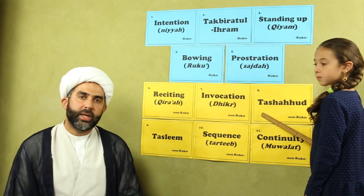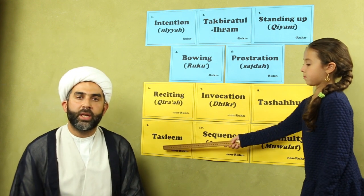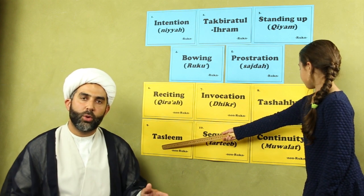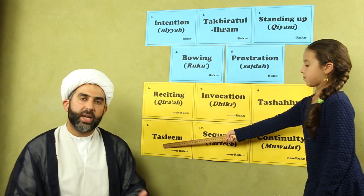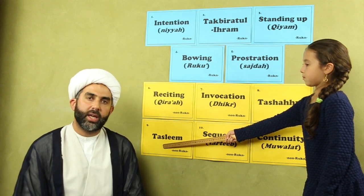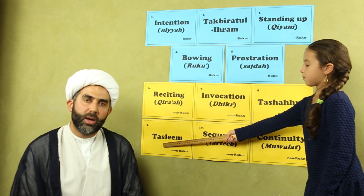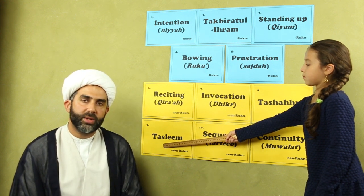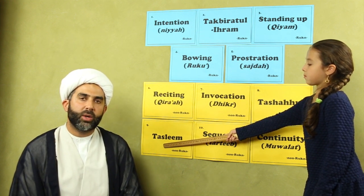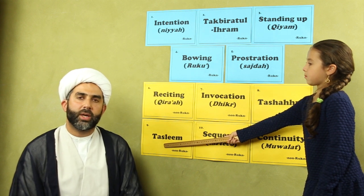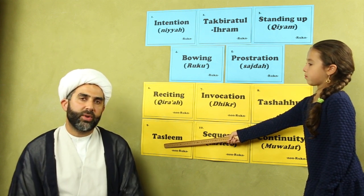Number nine is tasleem. Tasleem means you are finishing off your prayer — you are exiting your salah — when you say: Assalamu alayka ayyuhan nabi wa rahmatullahi wa barakatuh, assalamu alayna wa ala ibadillah as-saliheen, assalamu alaykum wa rahmatullahi wa barakatuh. The salah is over.